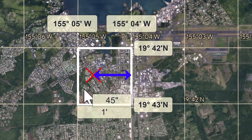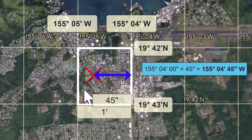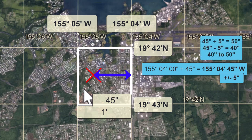Three quarters of a minute is 45 seconds. We add 45 seconds to the right-hand longitude line to come up with a longitude of 155 degrees, 4 minutes, and 45 seconds. We also have to add an appropriate level of uncertainty, which in this case seems to be about plus or minus 5 seconds. That means when I eyeballed this distance to be three quarters of a minute, I don't think it could be bigger than 50 (45 plus 5) or less than 40 (45 minus 5).